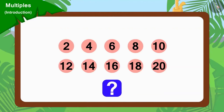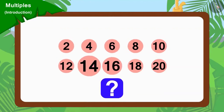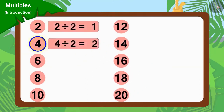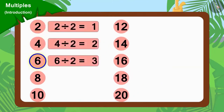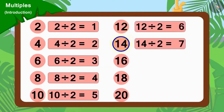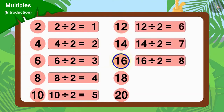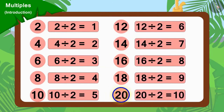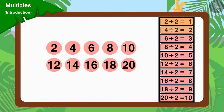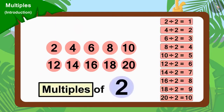Children, do you see anything special in these numbers? Yes, we can divide all these numbers by 2. Numbers that can be divided by 2 are multiples of 2. In this way, 2, 4, 6, 8, etc. are multiples of 2.